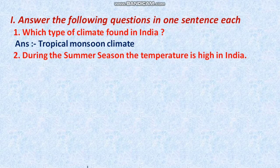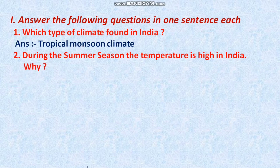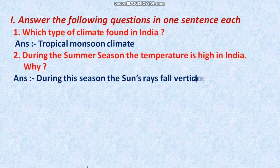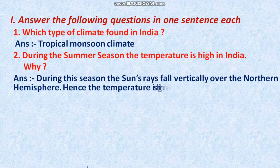Question 2: During the summer season, the temperature is high in India. Why is the temperature high in the summer season? The answer is: during this season the sun's rays fall vertically over the northern hemisphere. Hence the temperature is high in India.